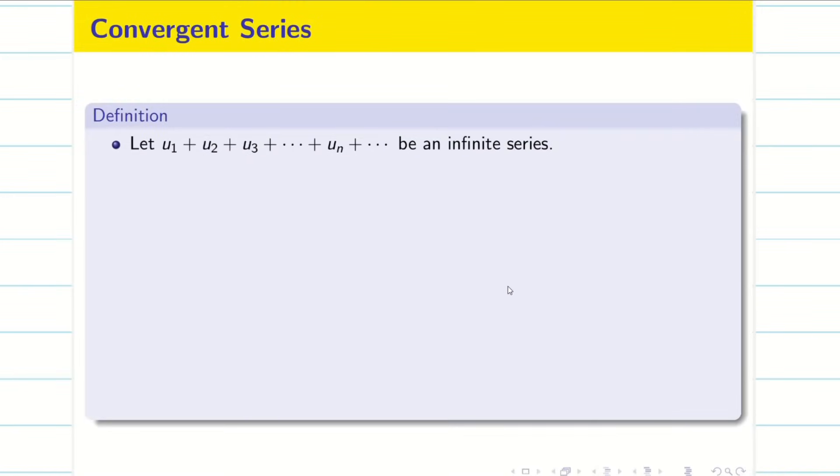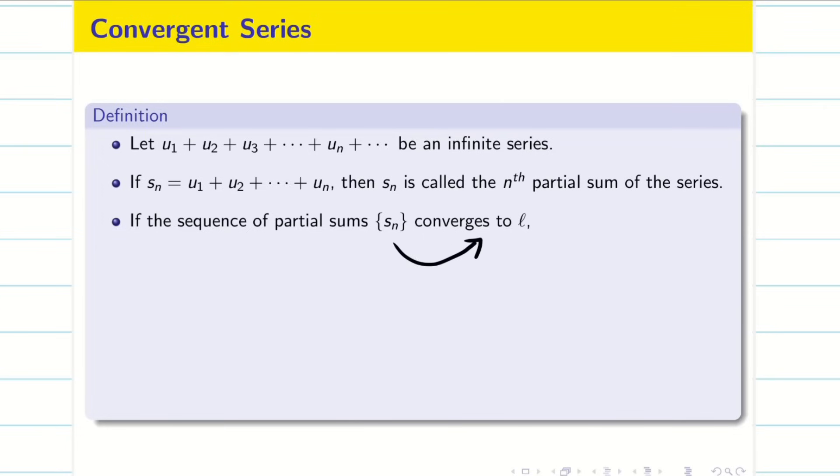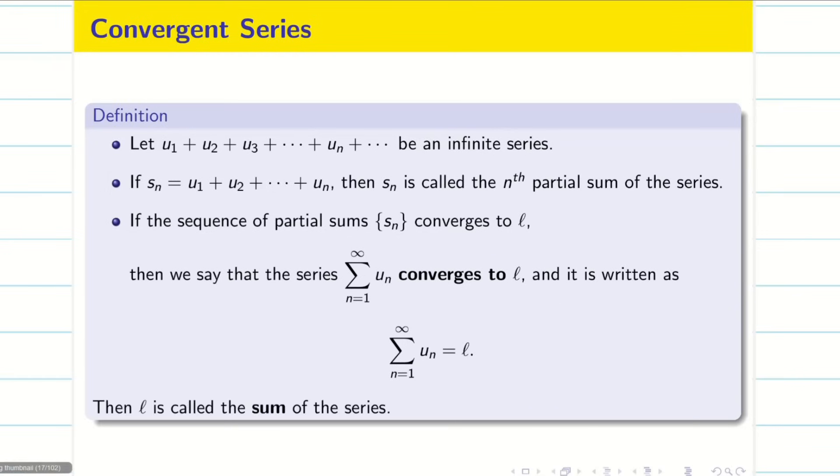Next, what is meant by a convergent series? Now you take U1, U2, U3, etc. as an infinite series. I am going to take a partial sum. People say it as the nth partial sum. I am going to add the sequence up to n terms. Now, this sequence of partial sums, if it is converging to a number L, then we say the series converges to this value. And it can be written as summation n equal to 1 to infinity Un equals L. Then L is called the sum of the series.